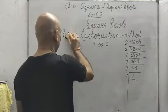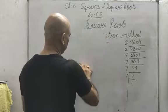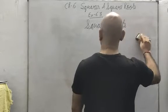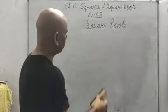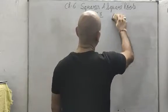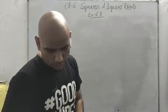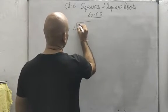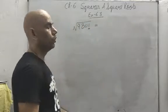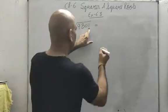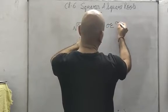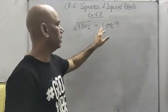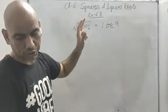Exercise 6.3. The method has been explained. Let us see the questions — we will solve one question from each part and the rest you will solve in your notebook. Question number 1: What could be the possible unit digit of the square root of the following numbers?